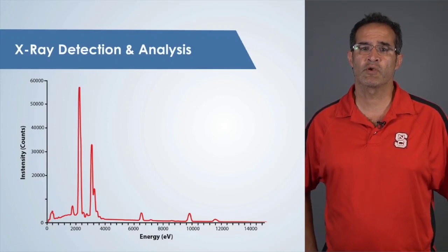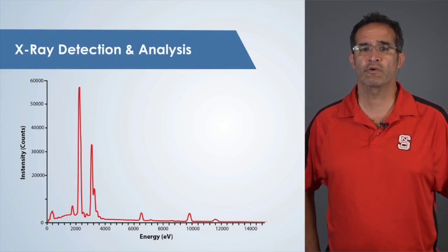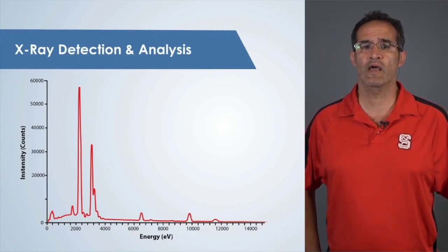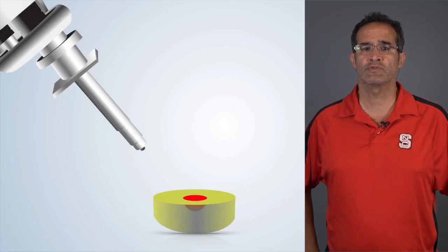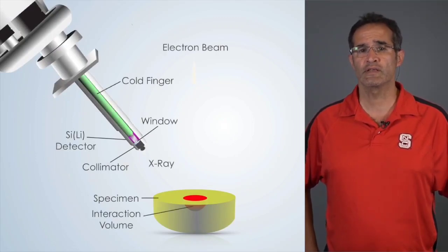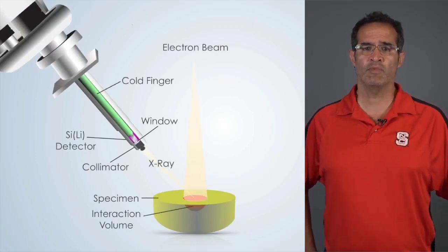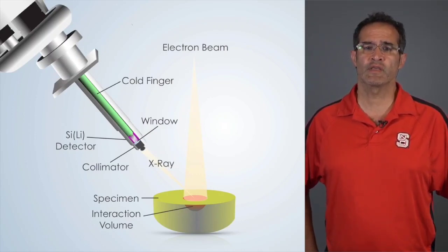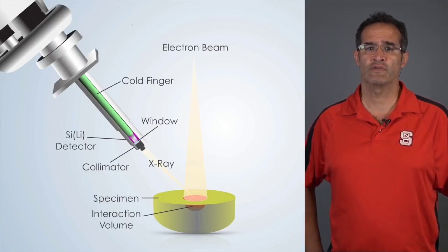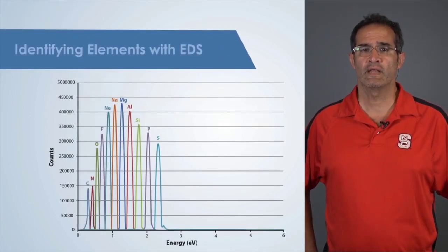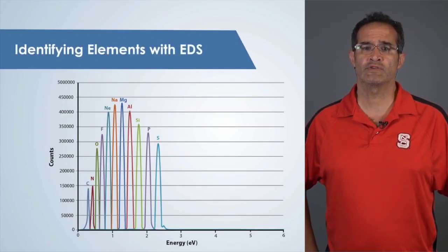Analyzing this signal for an EDS experiment involves measuring the energy of each characteristic x-ray signal and counting how often that particular energy signal appears. A special detector must be installed on the electron microscope to detect and measure these signals, simply called an EDS detector. The beam hits the sample, characteristic energy signals are generated, and the EDS detector amplifies and measures the energy of the x-ray. Then, analysis software counts the amount of x-rays at each energy and plots them on a graph called a spectrum.